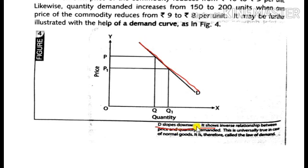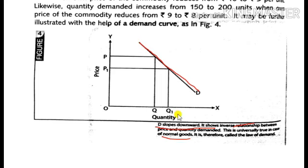The demand curve D slopes downwards, showing an inverse relationship between price and quantity demanded. This is universally true in case of normal goods. The Law of Demand is the inverse relationship which exists between price and quantity demanded, and it holds good for normal goods.